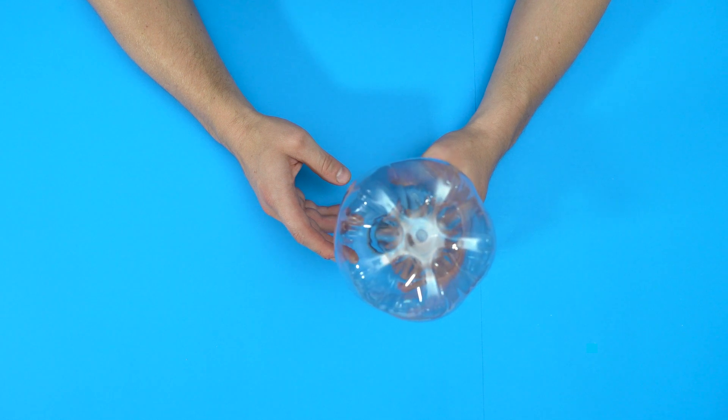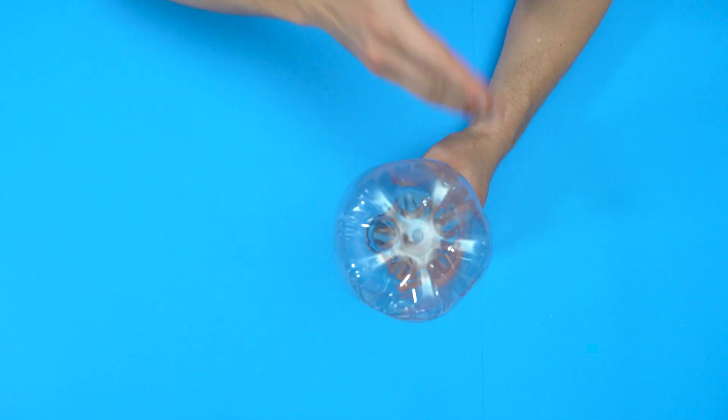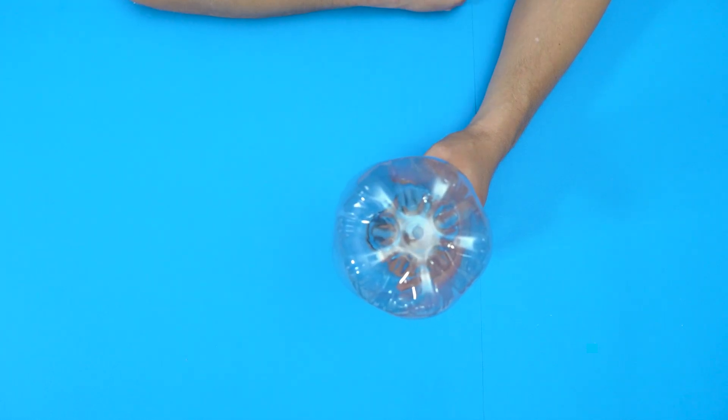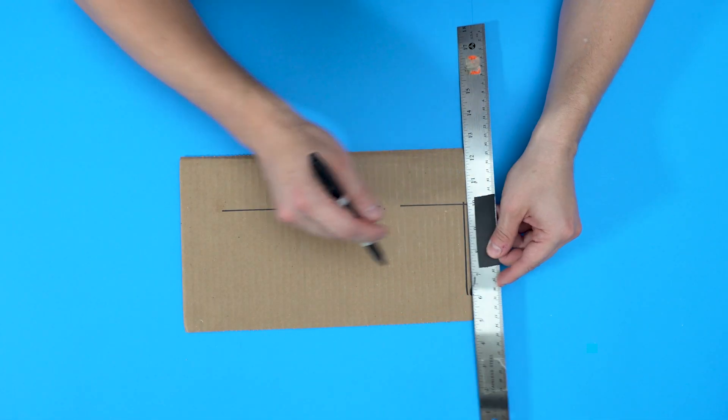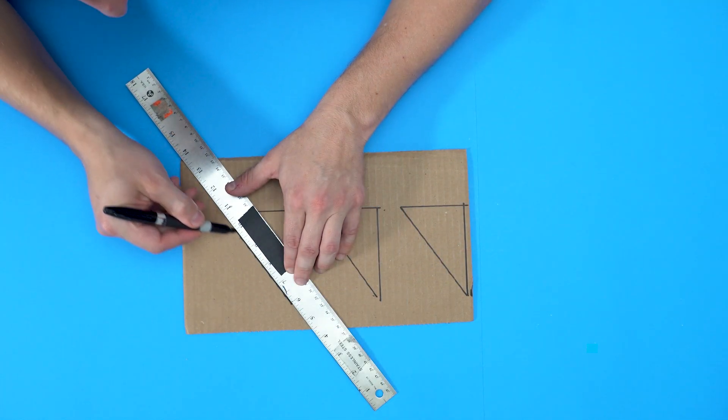All right, so the first thing we're going to do is create fins for stability. We're going to end up cutting three fins from cardboard and then attaching them. Let's go ahead, take our cardboard, and create the template to cut these out.